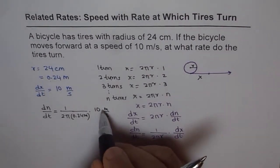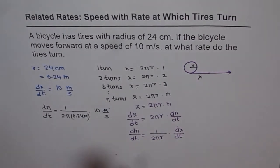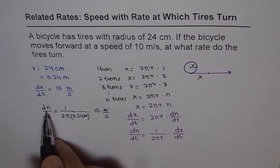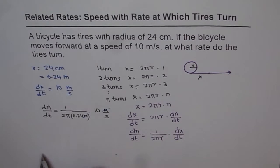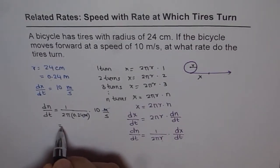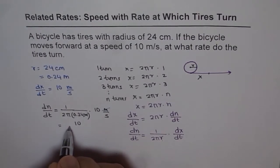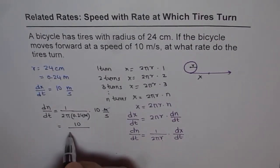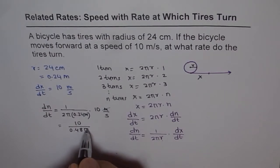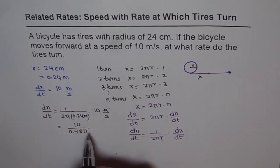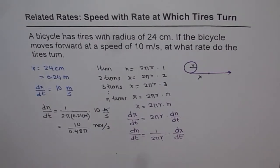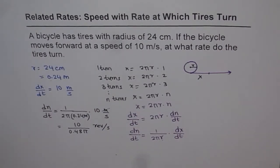From here, you will find the units also. Meters and meters will cancel out, so per second - number of turns per second is the rate of change of number of turns. Using calculator, you can calculate this value, which is 10 divided by 0.48π. So 10 divided by 0.48π and revolutions per second is the unit. Let's use calculator. It is 10 divided by 0.48 divided by π, which equals 6.631.